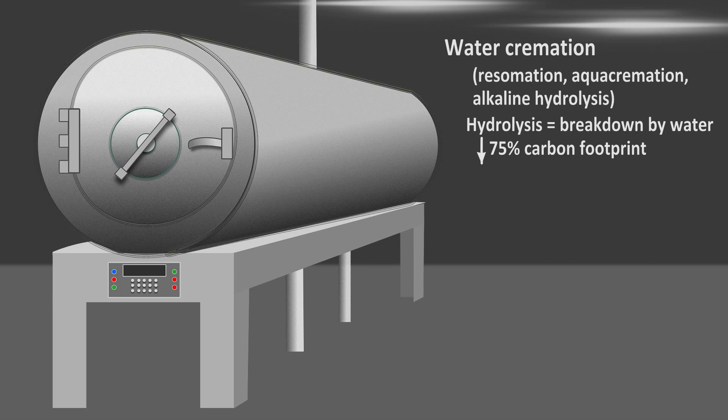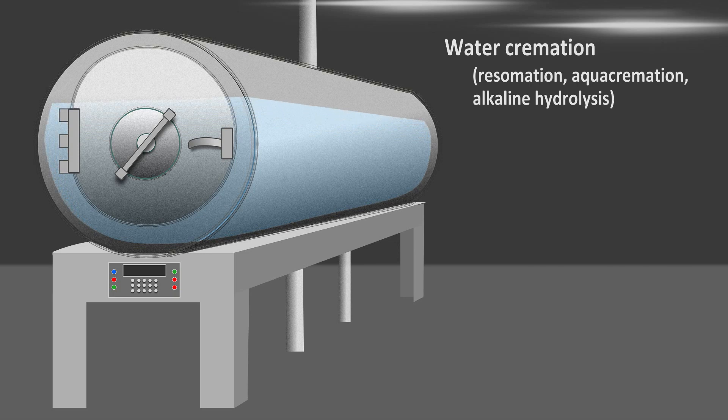Water cremation is carried out in a steel pressure tank large enough to hold a person. The tissues of the body won't spontaneously break down in water. An alkaline or basic solution has to be used, typically 5% potassium hydroxide in water. The solution also has to be heated to 150 degrees Celsius.